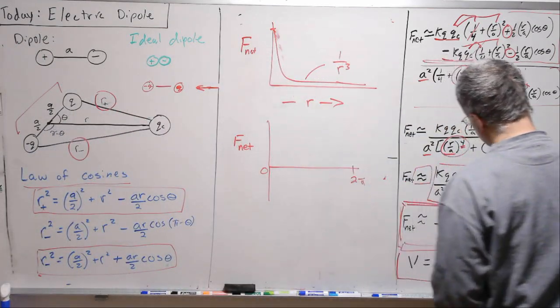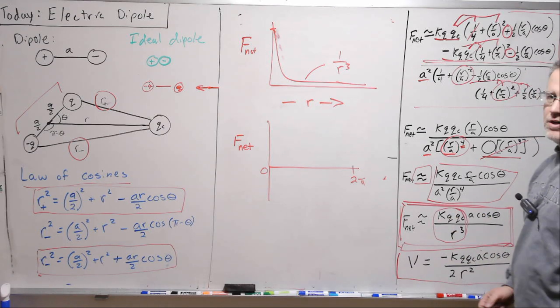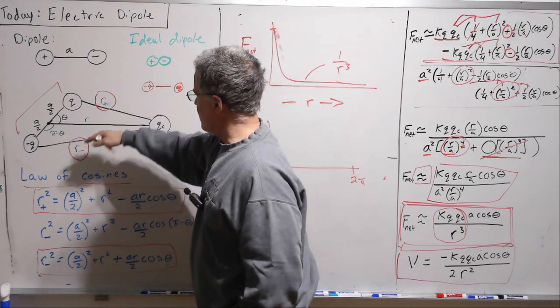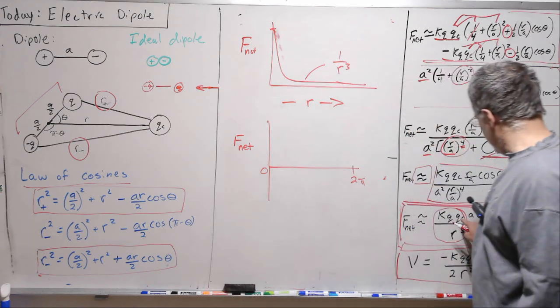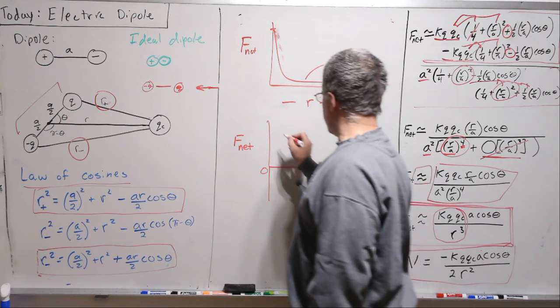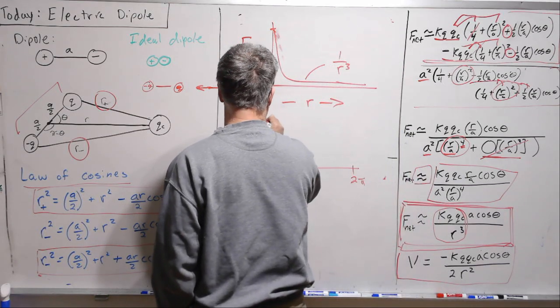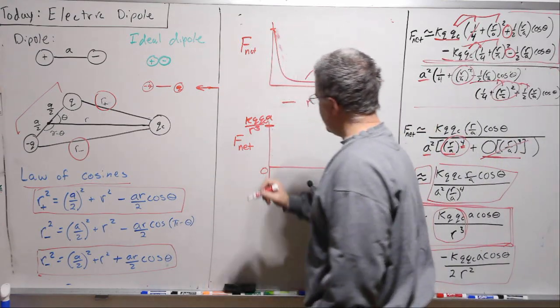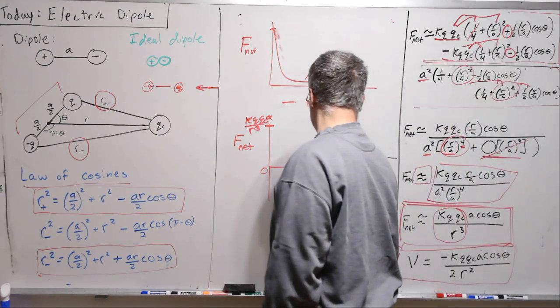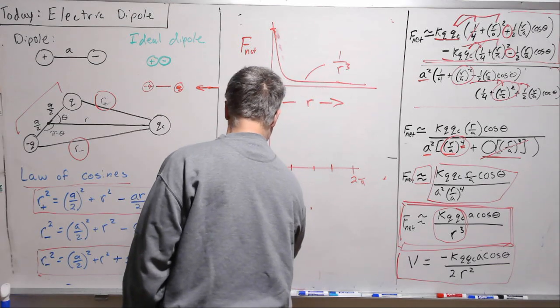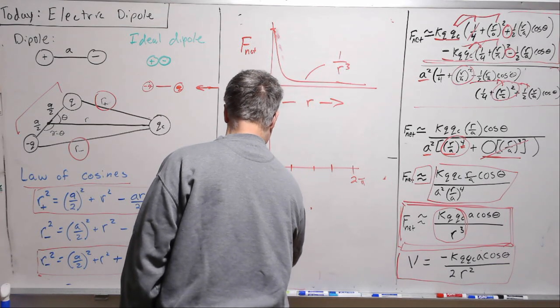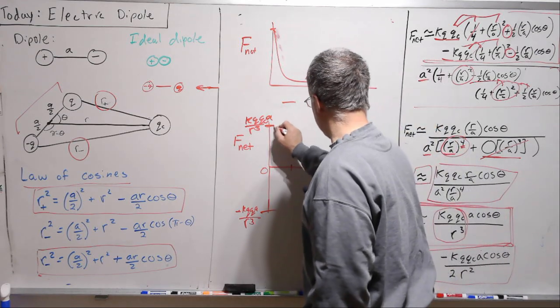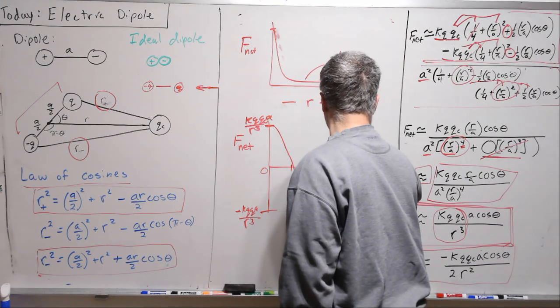Perhaps more interesting is the net force as a function of angle. So I'm going to go 0 to 2 pi. And let's take a look at this. So this will have some value. We'll imagine we're stuck at a particular distance away and we're just going to rotate this dipole. So we're going to keep R the same and then we're just going to rotate this. So we'll start off. Cosine of 0 is 1. So we're going to start off here at KQqC over R3, times a. And this will behave like cosine. So it'll be minus this value at pi, and then 0 at pi over 2. It'll look like that.